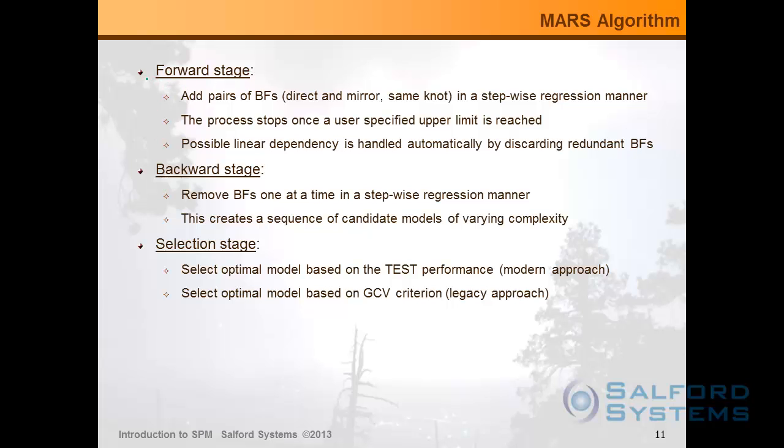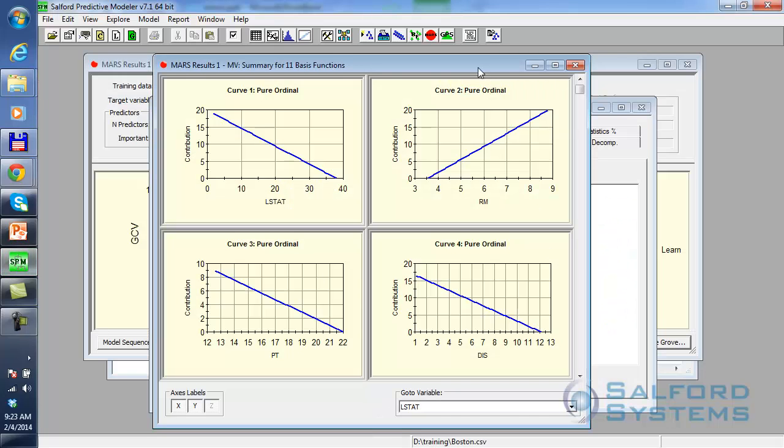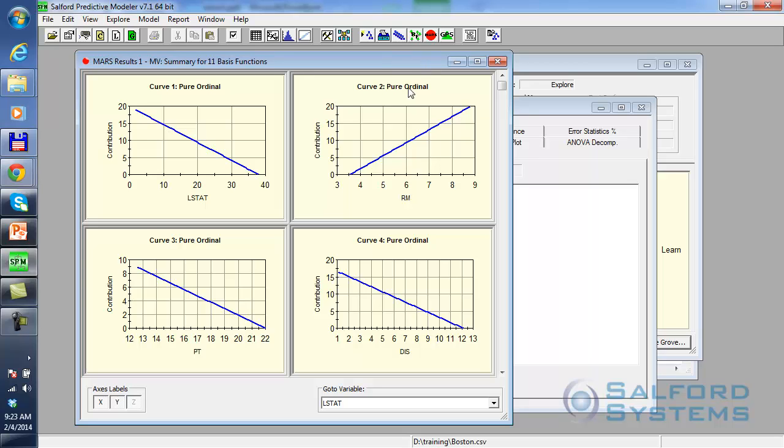And once you have that, it's very easy to set up the Mars algorithm. There will be three main stages, but the forward stage being the most important one. In the forward stage, you add pairs of basis functions slash knots in a stepwise regression manner such that eventually you discover all of the potential knots out there. Then you have a backward stage where knots or basis functions are removed one at a time such that you're cleaning up all of the redundancies that may have been introduced due to sequential nature of the process. And then you also have a model selection stage where based on either some kind of generalized cross-validation or independent test sample performance, you select optimal model. Again, all of the specifics we discussed in our Mars training. For now, I just want to show you what happens in the real software here.